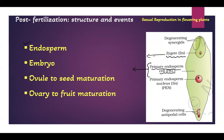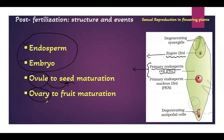Zygote will undergo continuous mitosis to form embryo, and embryo and endosperm are within the ovule. The complete ovule will mature into a seed. Ovules are present within the ovary, so the ovary is also converting into a fruit. All of these events are happening simultaneously - ovary converts into fruit, ovule converts into seed, and inside the ovule there is formation of endosperm and embryo.